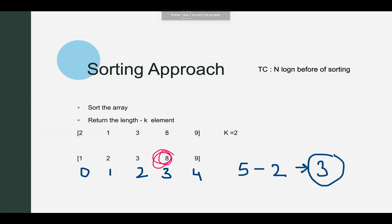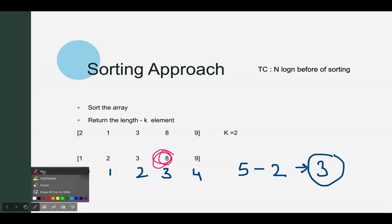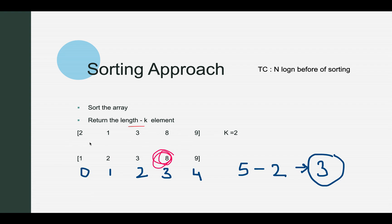The first basic approach that comes to mind: you need to identify the kth largest element in an array that is not sorted. Sort the array, then find the kth largest element. The index of the kth largest element is simply total length minus k. Let's walk through an example — given the array [2, 1, 3, 8, 9], the first step is to sort it. The sorting time complexity is O(n log n).